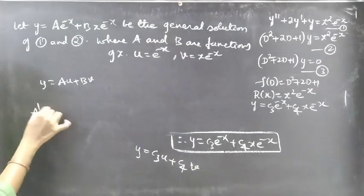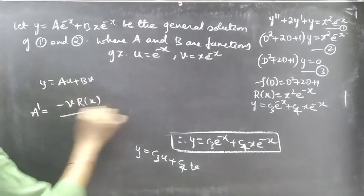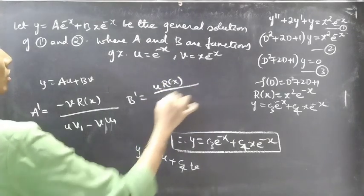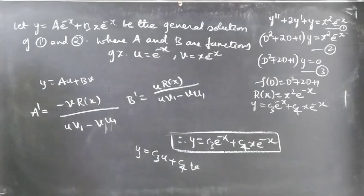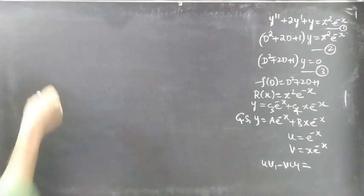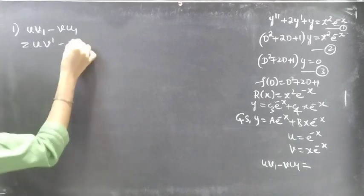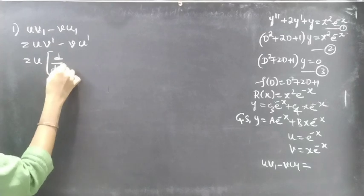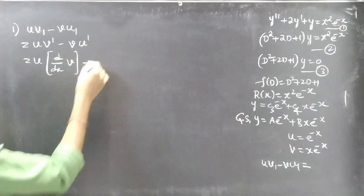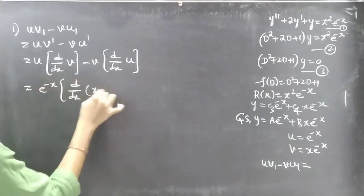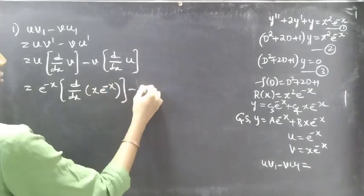The formula for a' is given by: a' = −v·R(x) / (u·v₁ − v·u₁), where v₁ is the derivative of v and u₁ is the derivative of u. Let's first compute uv₁ − vu₁, which appears in both formulas. This equals u·(dv/dx) − v·(du/dx), where u = e^(-x) and v = x·e^(-x).